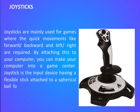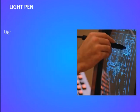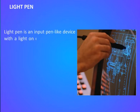A joystick is an input device having a flexible stick attached to a spherical ball for quick movement and a button for firing weapons. It is attached at the back of the system unit. Light pen — the light pen is an input pen-like device with a light on one end and a wire connected to the computer on the other end.